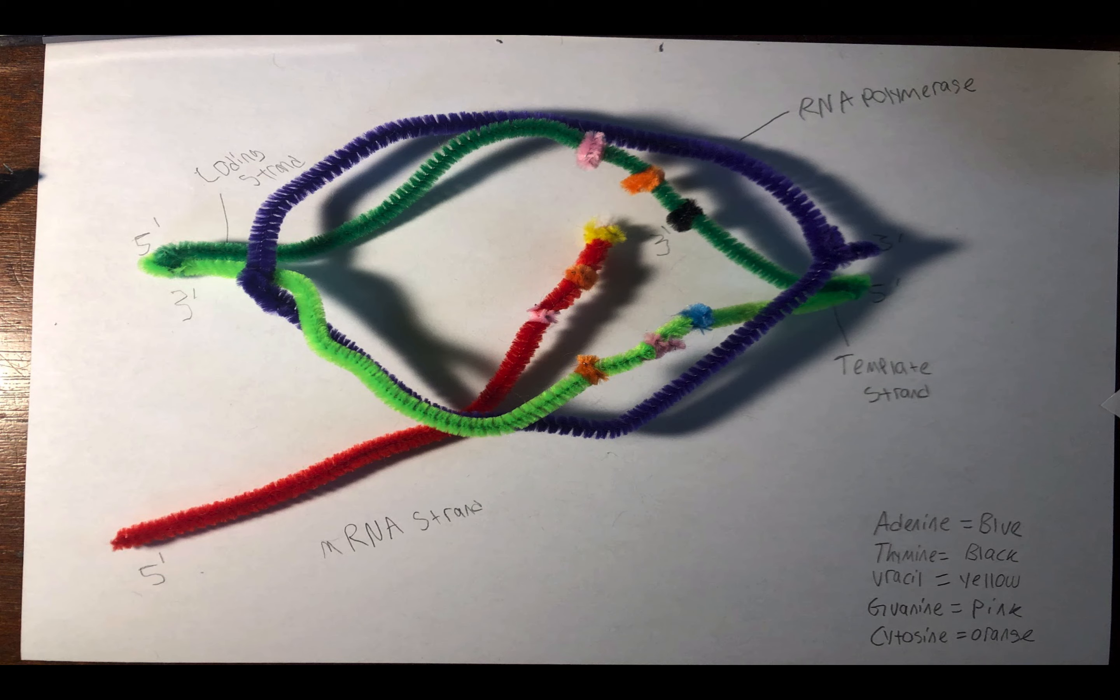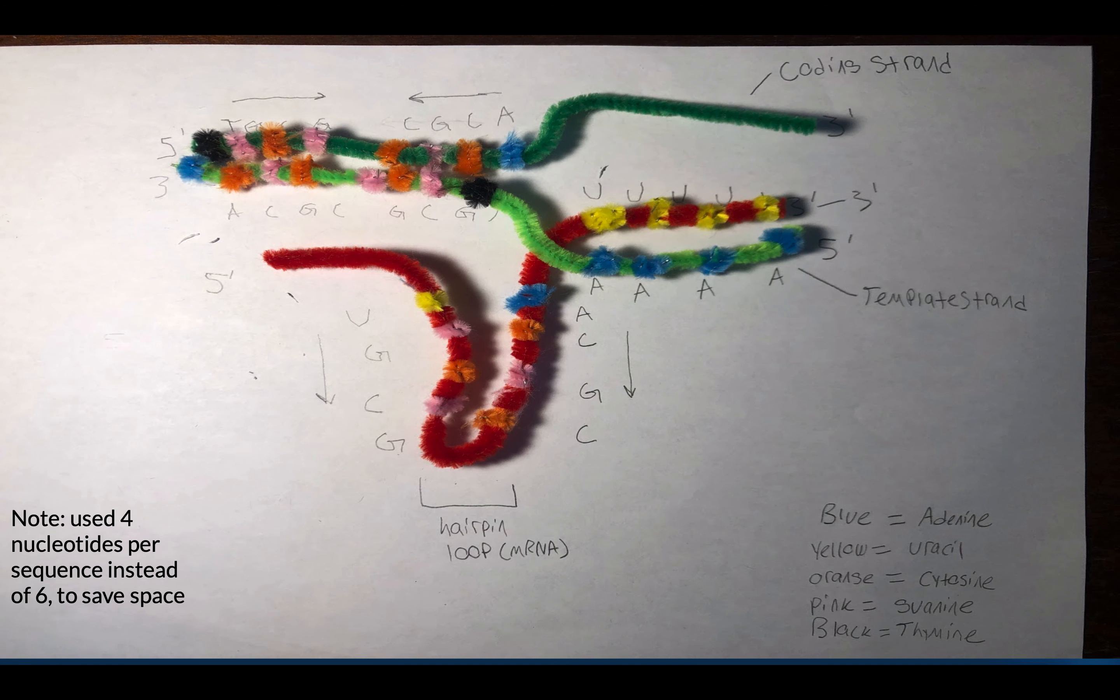Finally, in termination, there are two ways to terminate transcription: rho protein dependent and rho protein independent. In the independent form, the RNA polymerase arrives at a region rich in C and G nucleosides as shown here.